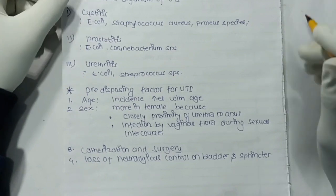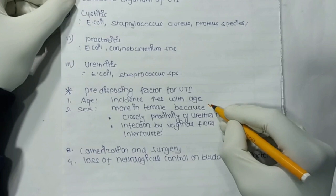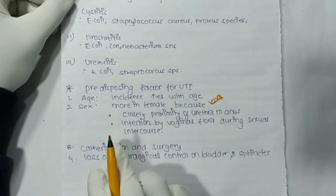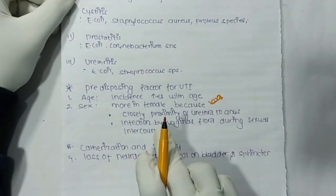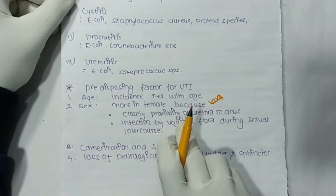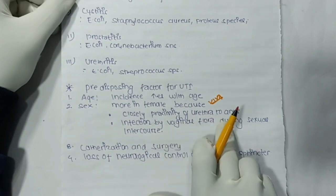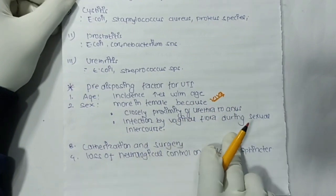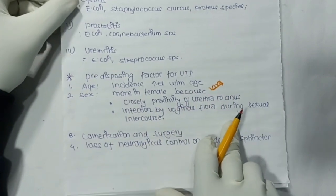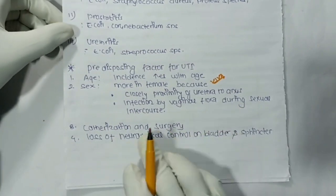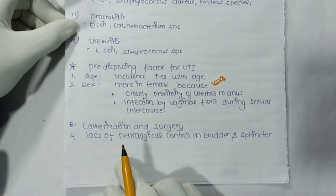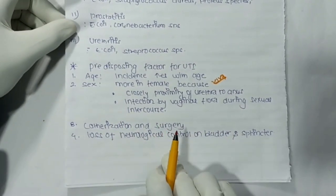Predisposing factors of UTI: First is age — incidence increases with age, and it is more common in females because of the close proximity of the urethra to the anus and infection during sexual intercourse. Next is catheterization and surgery, and lastly, loss of neurological control on the bladder and sphincter.